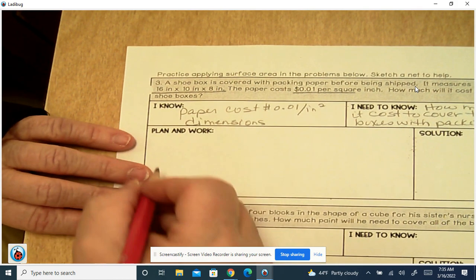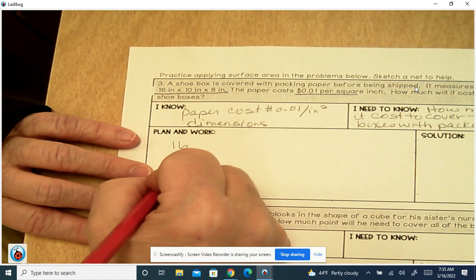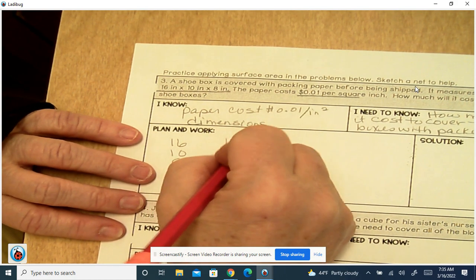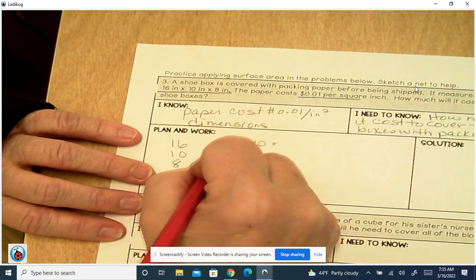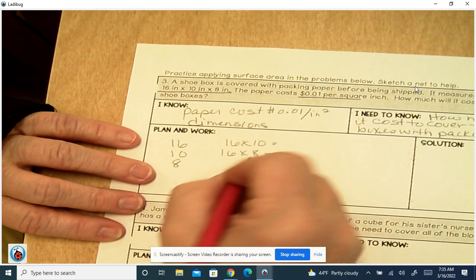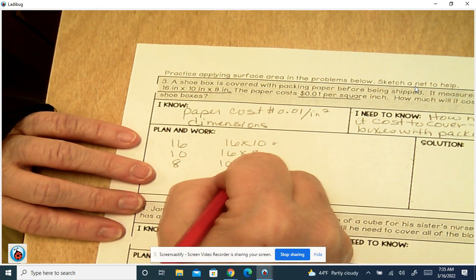Alright, so we've got our dimensions of 16, 10, and 8. We've got 16 times 10, 16 times 8, 10 times 8.